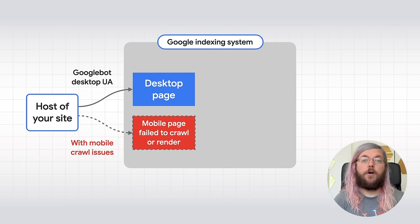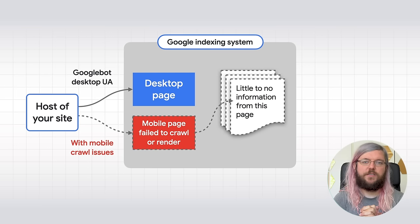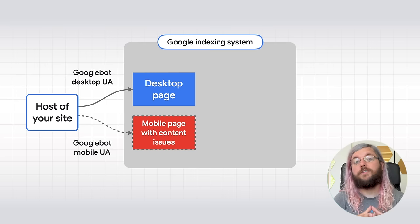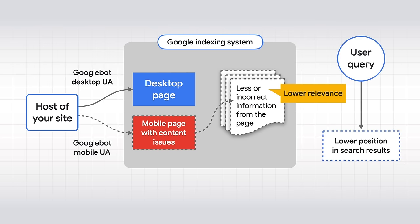Now that we know the difference between desktop and mobile-first indexing, what challenges can occur with mobile-first indexing on your site? One possibility is that something is going wrong when we crawl with a mobile Googlebot. The request might be treated differently by your server based on the user agent, or something else might be going wrong when making a request to the mobile pages. If that happens, there will be little to no information that we can get from your pages, and we can't get the necessary signals to show your page in the search results. Another possibility is that your mobile page is having content issues. We might get less or even incorrect information from your page, which results in us getting less information about the page's relevance. Both situations will prevent Google from serving your site well when your site is enabled for mobile-first indexing.